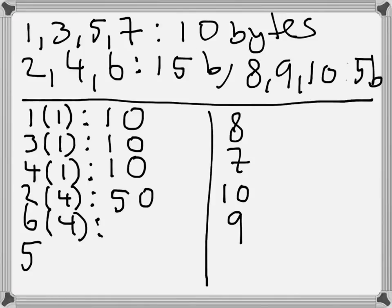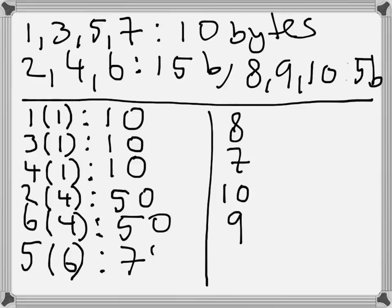When I receive packet number 5, I have now received all bytes up through packet 6, and therefore I can use acknowledgement number 75. When I receive packet number 8, the story almost repeats — I'm still missing packet number 7, so when I count up how many bytes I have correctly received it will be those including packet number 6, and therefore the acknowledgement number is 75 again.